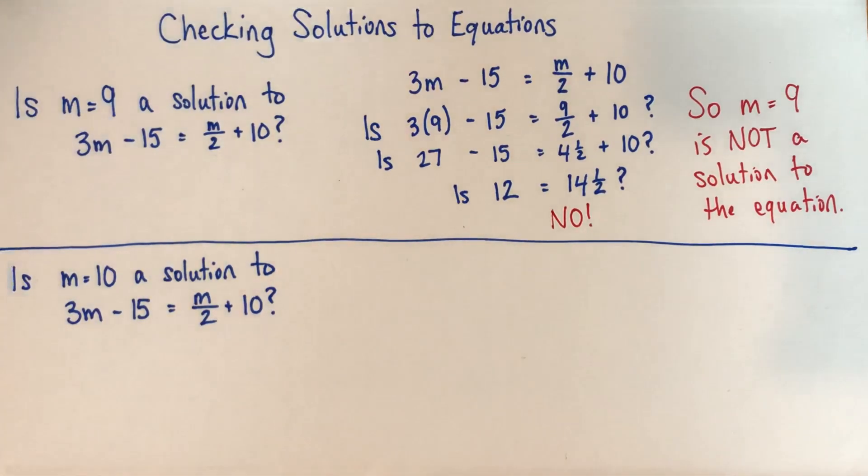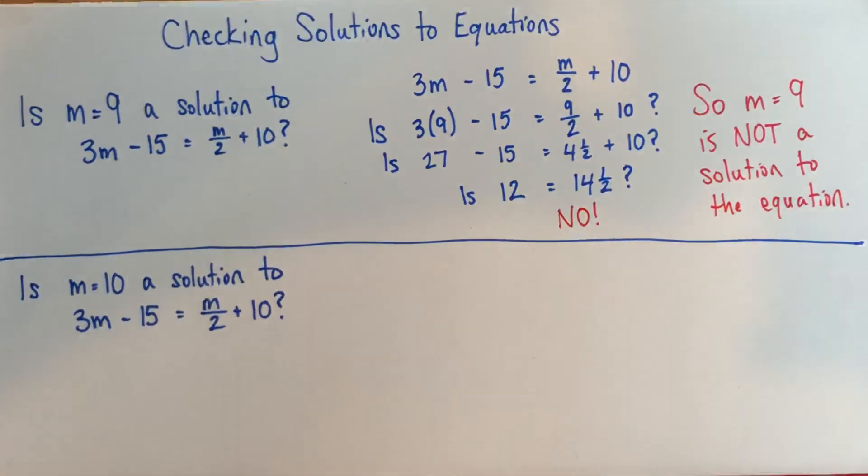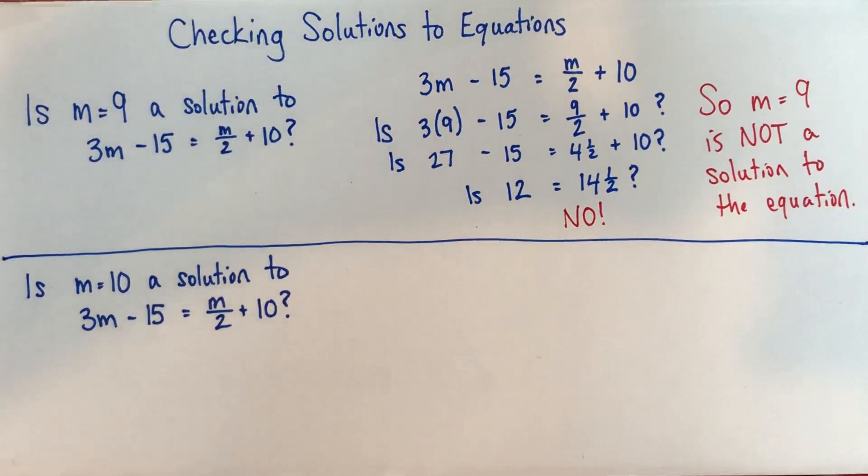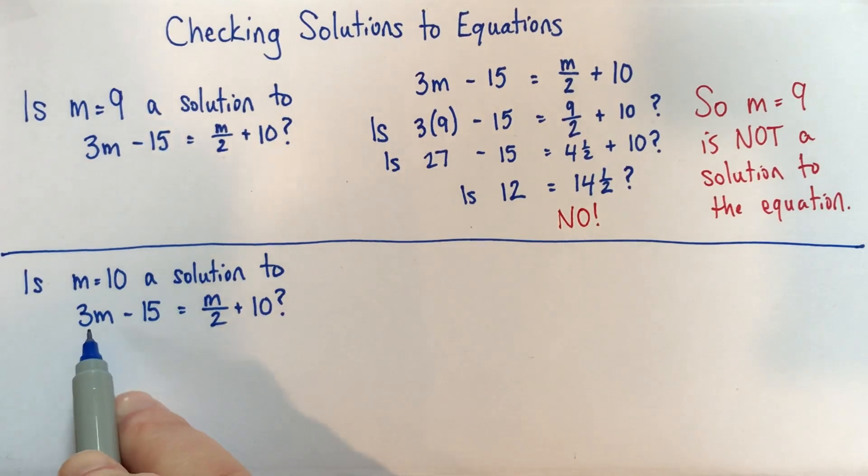Okay, so let's try it with m equals 10. So the question is, oh sorry about that, knocked my camera there. Okay, so the question is, is m equal 10 a solution to 3m subtract 15 equals m divided by 2 plus 10?